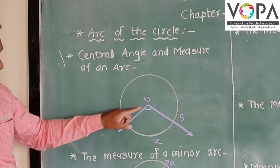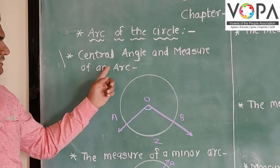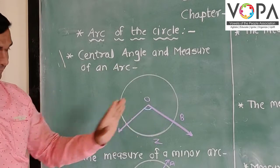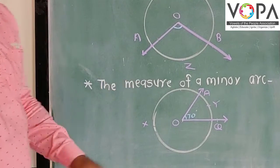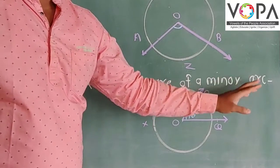The name of angle AOP is called as a central angle. The next topic is the measure of a minor arc.